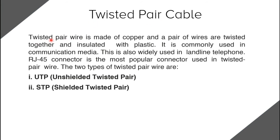Let's study twisted pair cable. Twisted pair wire is made up of copper; a pair of wires are twisted together and insulated in plastic. It is used in communication media for transferring data between connected devices in a network environment, and is also widely used in landline telephone connections. The most popular connector used with twisted pair wire is the RJ-45 connector. The two types are Unshielded Twisted Pair (UTP) and Shielded Twisted Pair (STP).